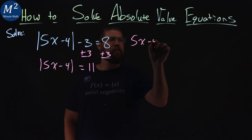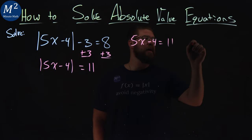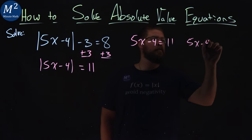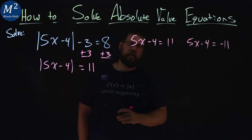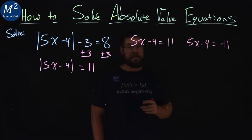We want the 5x minus 4 is equal to a positive 11, and 5x minus 4 is equal to a negative 11. And we're going to solve each one individually.